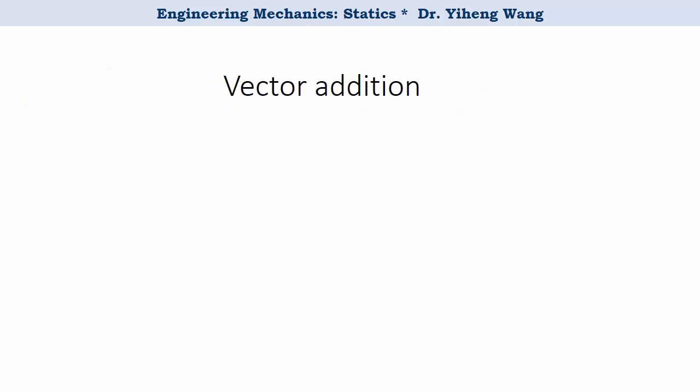To perform vector addition, we need to follow the parallelogram law. Let's say we have two arbitrary vectors a and b, and we want to find the sum, in other words, the resultant vector r, which equals to a plus b.